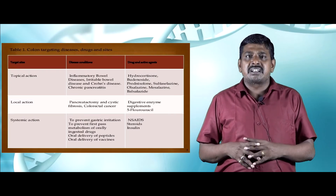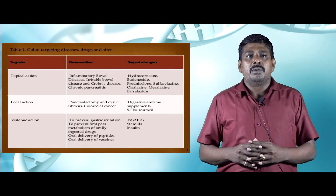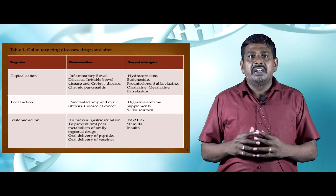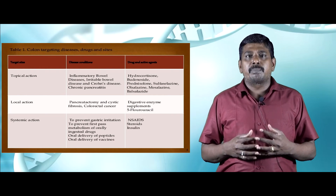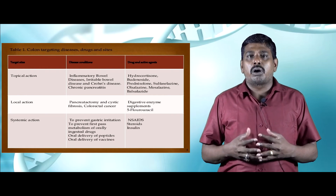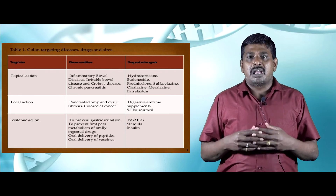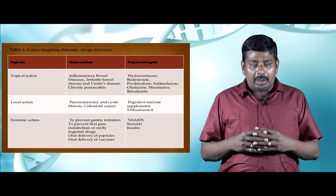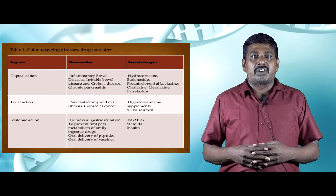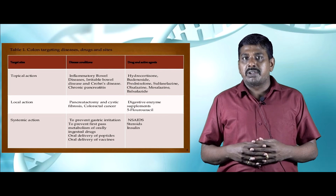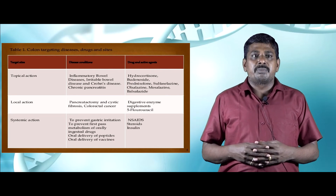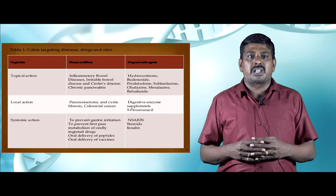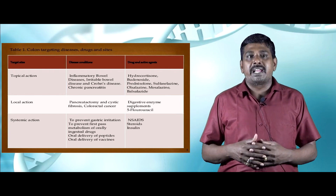Regarding the target site, disease condition, and drug mapping: for topical action, disease conditions include inflammatory bowel disease, irritable bowel disease, Crohn's disease, and chronic pancreatitis, with drugs such as hydrocortisone, budesonide, prednisolone, sulfasalazine, olsalazine, mesalazine, and balsalazide. For local action targeting pancreatectomy, cystic fibrosis, and colorectal cancer, digestive enzyme supplements and 5-fluorouracil are relevant agents.